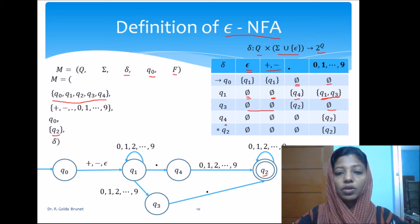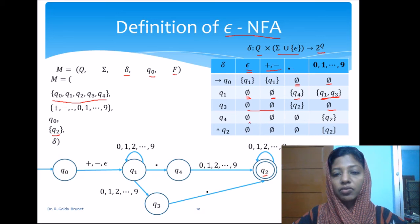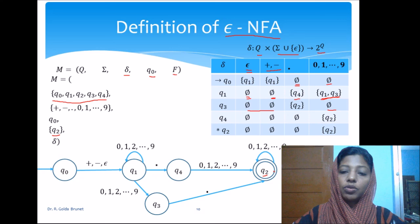And from Q4, we accept only the digit. All the three inputs epsilon, plus or minus symbols, and dot will not have any transition. And from Q4 upon the input of any of the decimal digit, we go to Q2.